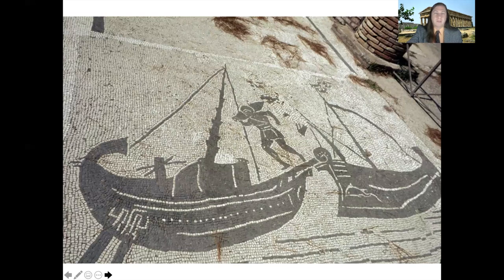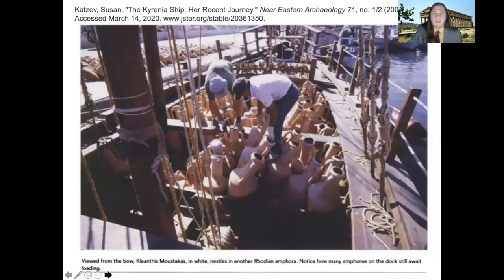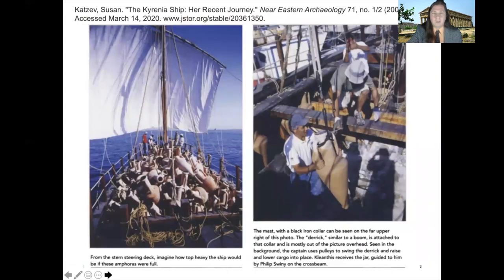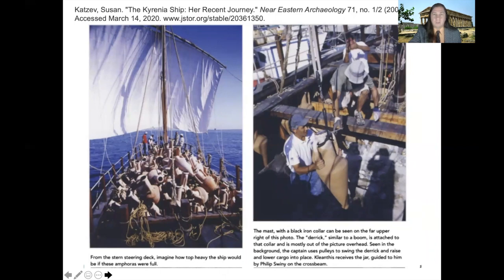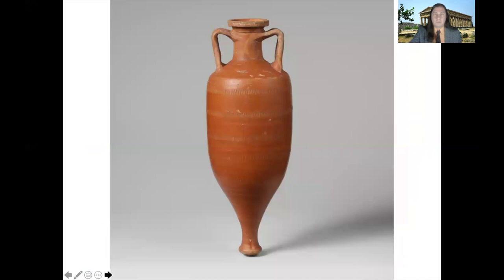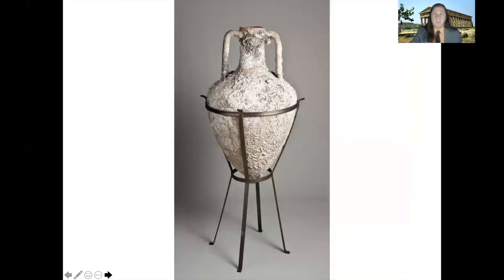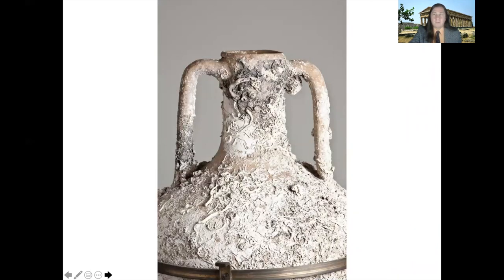This mosaic from Ostia, the main seaport of Rome, shows a sailor loading an amphora over his shoulder onto a ship. There's also a reconstruction of a Greek sailing vessel with amphoras loaded into the hold — they were packed heavily, like a modern cargo ship with shipping containers stacked on deck. Crews used a boom to load amphoras into the hold, reducing breakage and labor. The amphoras were sealed with goatskin put on wet, which dried airtight like a drum.